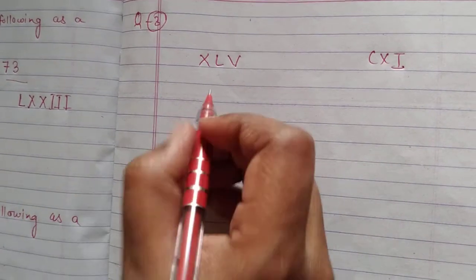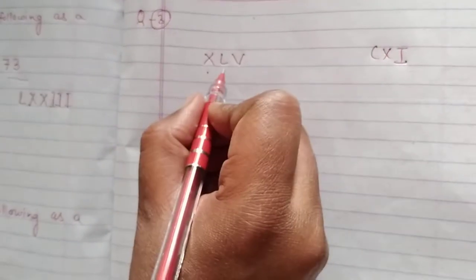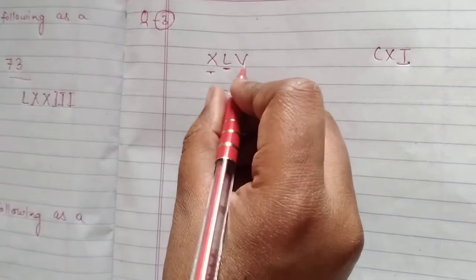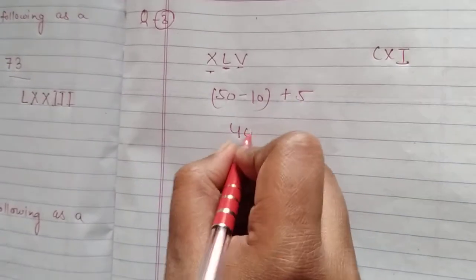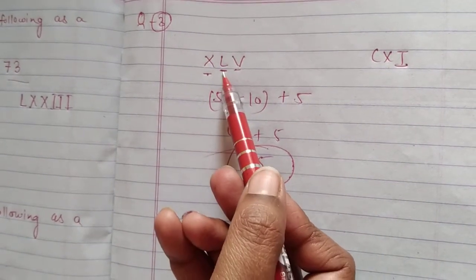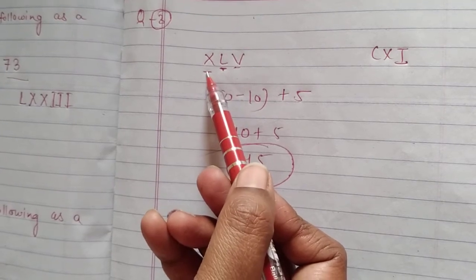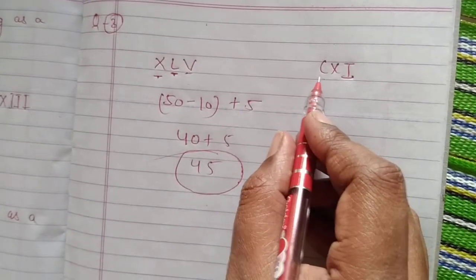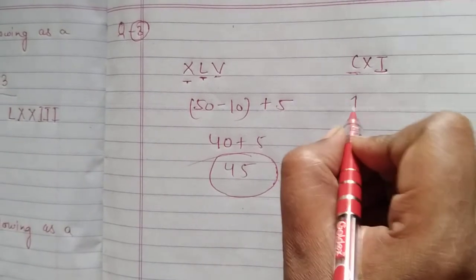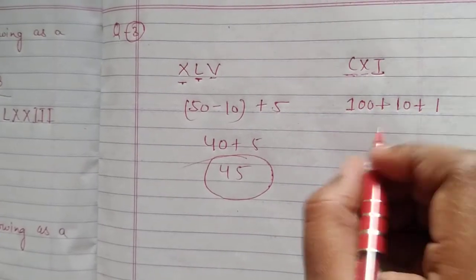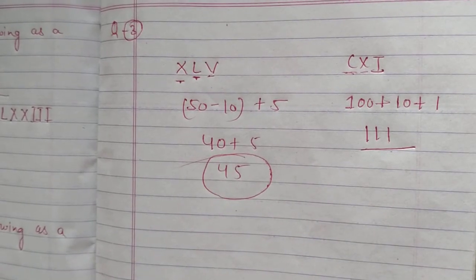In question number 3: write each of the following as Hindu-Arabic numerals. For XLV: L is 50 and X is 10. Since X is to the left of L, we subtract: 50 minus 10 equals 40. Then V is 5, so 40 plus 5 equals 45. So XLV is 45. For CXI: C stands for 100, X stands for 10, I stands for 1, so 100 plus 10 plus 1 equals 111.